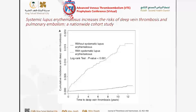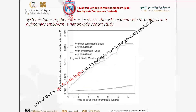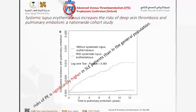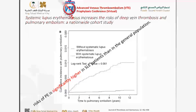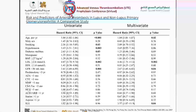This large study looked at the risk of venous thrombosis — mainly DVT and PE — in SLE compared to non-lupus patients. As the diagram clearly shows, the risk of DVT is much higher in lupus patients compared to the general population. The same finding was demonstrated with regard to pulmonary embolism — the risk of PE is significantly higher in lupus patients compared to the general population.